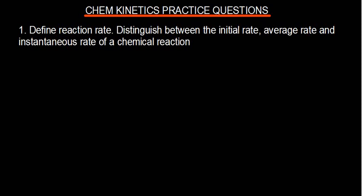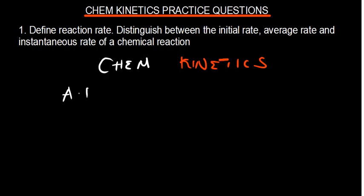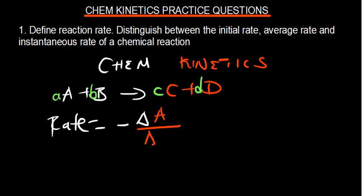In this tutorial we're going to go over chemical kinetics practice questions. First, let's review chemical kinetics. Chemical kinetics is the study of the rate of a chemical reaction — how fast or how slow a reaction progresses. If you're given reactants A plus B giving C plus D, the rate can be expressed in terms of reactants or products. For reactants, we put a negative sign and say the change in concentration of A over the change in time.